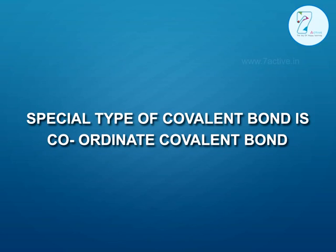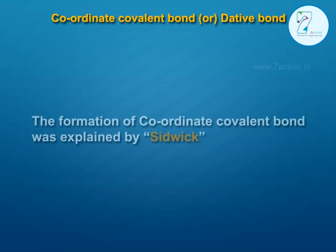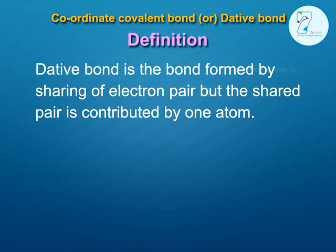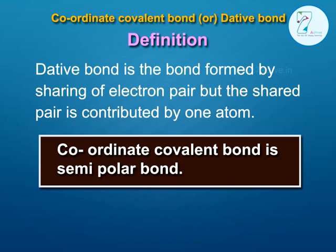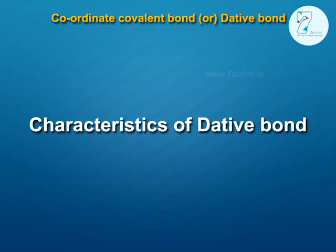A special type of covalent bond is the coordinate covalent bond, also called the dative bond. The formation of coordinate covalent bond was explained by Sidwick. A dative bond is a bond formed by sharing of an electron pair, but the shared pair is contributed by one atom only. The coordinate covalent bond is also called a semi-polar bond.